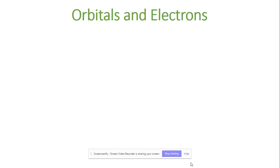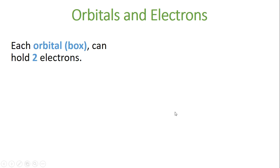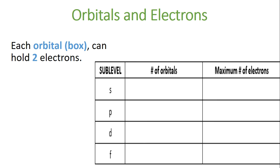So let's see if this goes a little better. Now we're going to talk about orbital diagrams. Orbitals can hold two electrons, and there are different numbers of orbitals in each sublevel. The s sublevel has one orbital, hence it can hold two electrons.